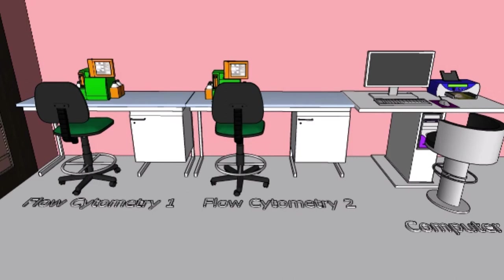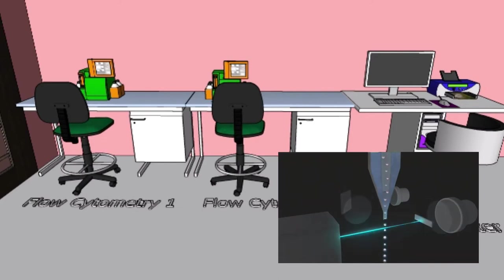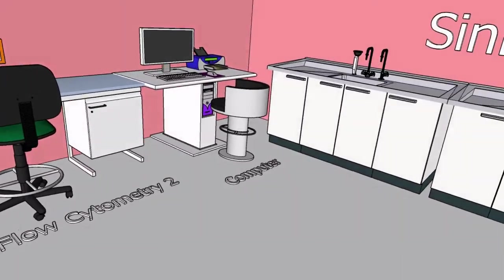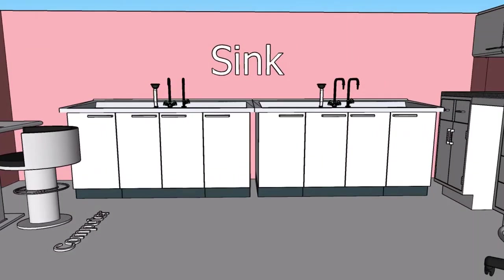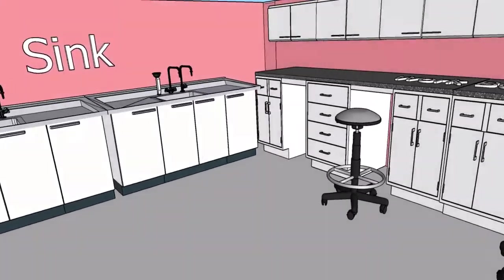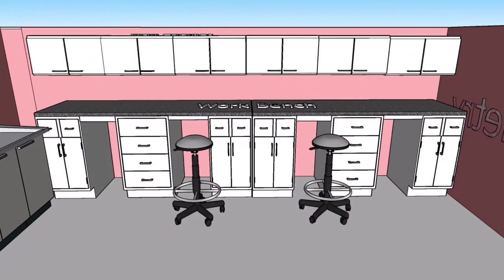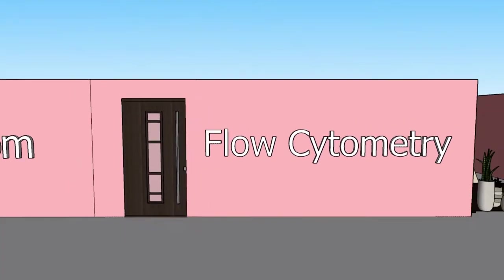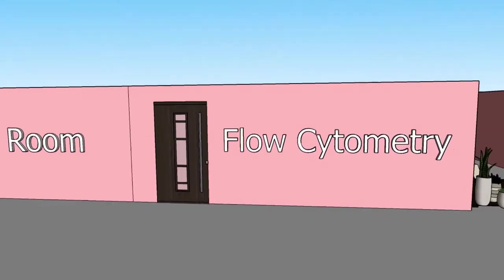There are two flow cytometry machines in this section. Using these machines, cells are suspended in a liquid stream and pass through a laser light beam in single file. The interaction with the light is measured by an electronic detection apparatus as light scatter and fluorescent intensity. A computer is placed right next to the flow cytometry machines for easy access to information processing. This flow cytometry section can fit up to five people.